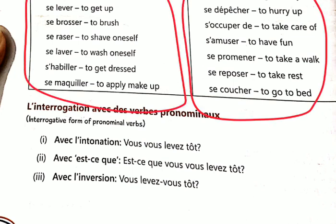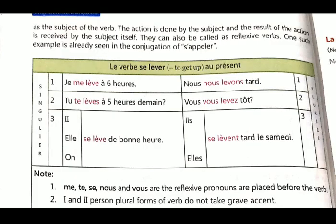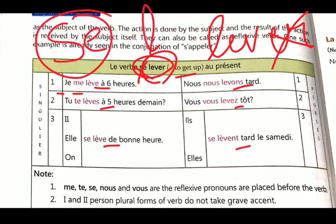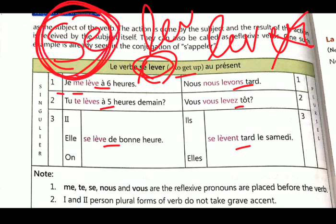So 'se' is the original form and with je this se will change to me, with tu this se will change to te, and so on. These are the verbs — read this verb; meanings are given. Now how to conjugate: one verb is given — se lever, which means to get up. With je, this se will convert to me, and the other endings remain the same. As you know, in the -er ending verb we cut -er and put -e, -es, -e, -ons, -ez, -ent. We just change this se that is given before le verbe: me, te, se, nous, vous, nous, vous, and se.